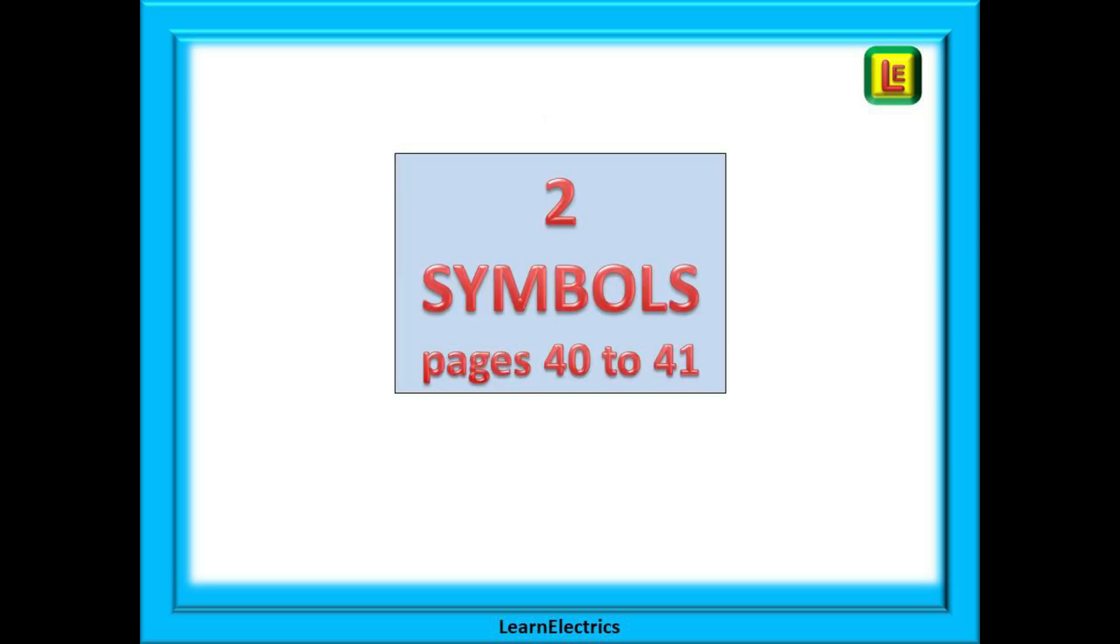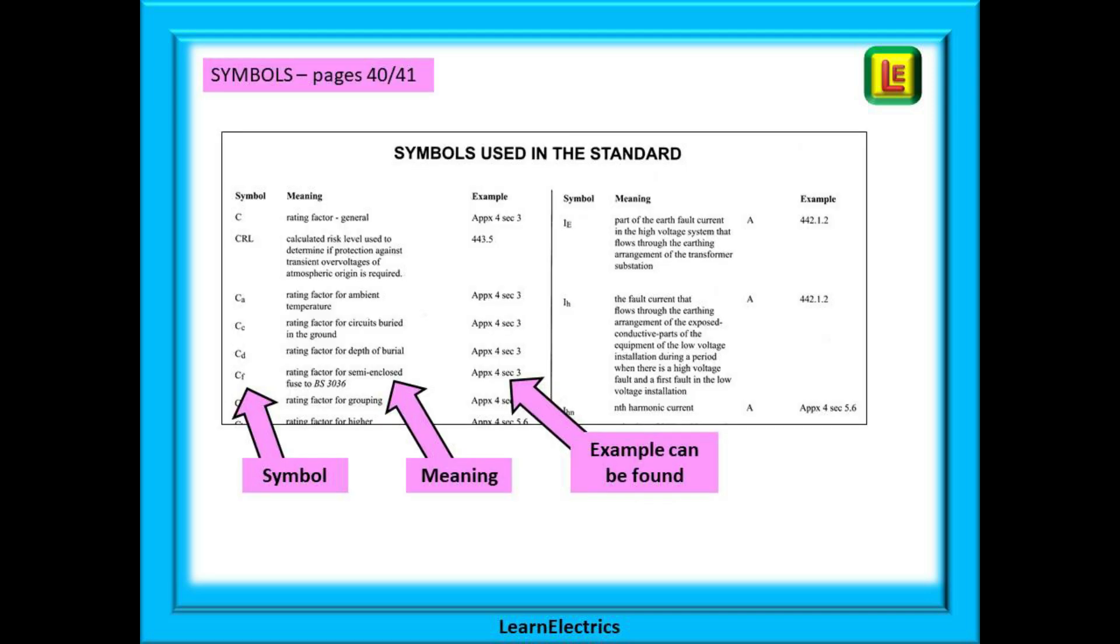Moving on to symbols on page 40 and 41. The symbols are shown alphabetically with their meanings shown at the side and then a regulation number in the wiring regs book where you can find an example of the symbols being used. Again, don't guess with symbol meanings. It is so easy to check it properly.